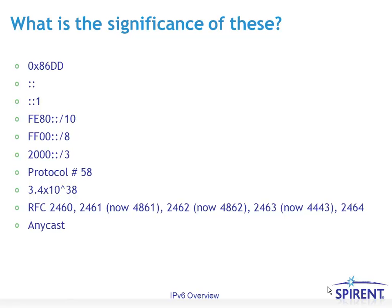Anycast refers to an address type that is looking for the closest device to you with that address. CIDR, pronounced 'cider,' is classless inter-domain routing — the hierarchical structure now used for IPv4. IPv6, on the other hand, is classless by nature. IPv6's default MTU is 1280, as opposed to IPv4's default MTU of only 576 bytes.